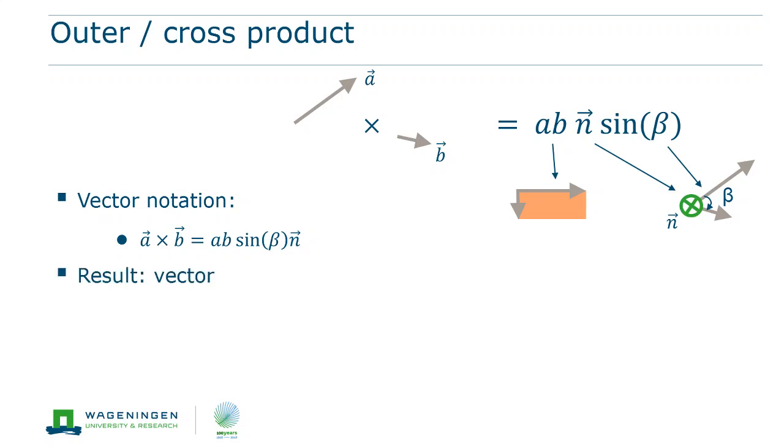As the result is a vector, this product is sometimes also called the vector product. In component notation, the vector that results has three components in which each component only depends on the magnitudes of the other components of vector a and b.